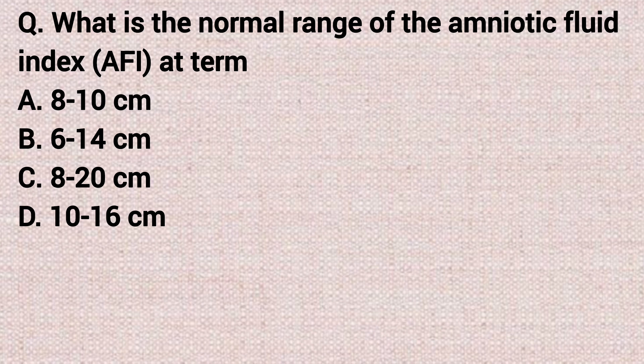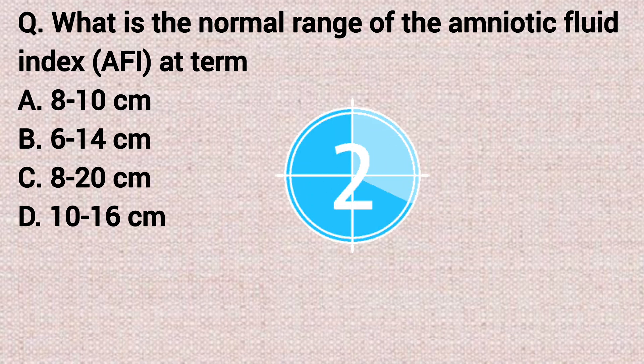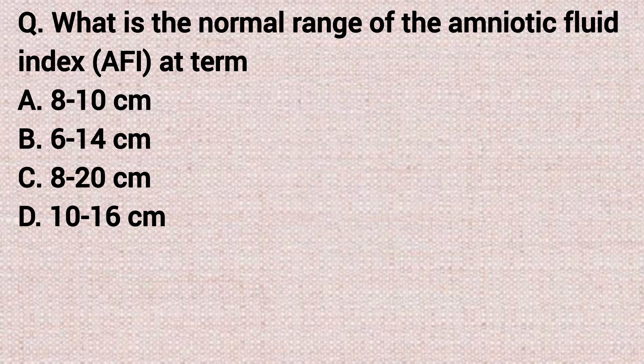The next question: what is the normal range of amniotic fluid index at term? Option A: 8 to 10. Option B: 6 to 14. Option C: 8 to 20. Option D: 10 to 16. The correct answer is option C, 8 to 20 cm.